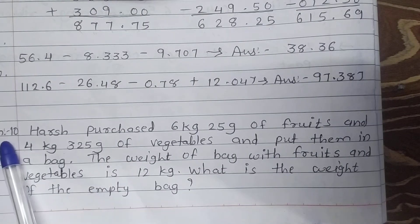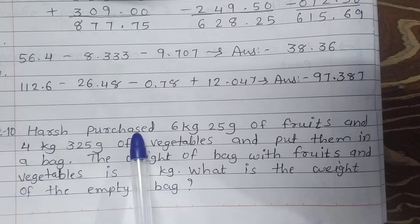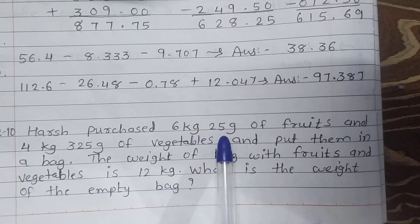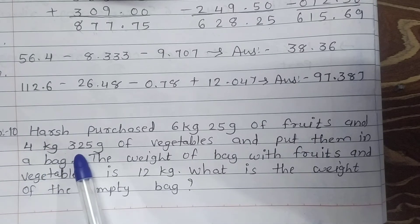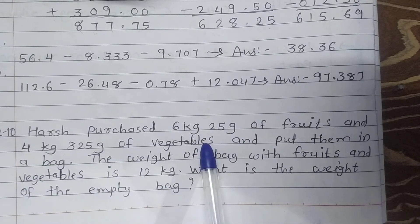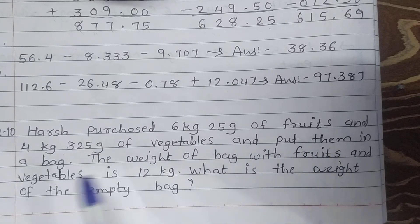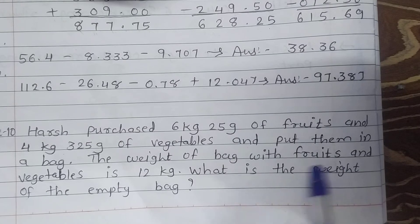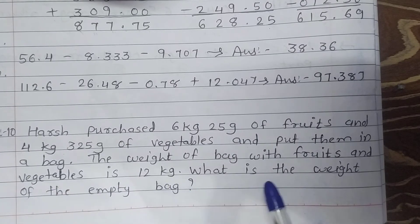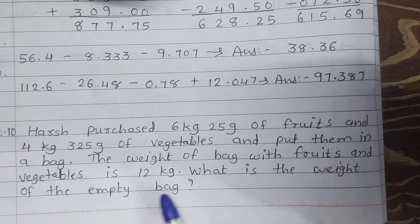Next, question 10: Harsh purchased 6 kg and 25 gram of fruits and 4 kg and 325 gram of vegetables and put them in a bag. The weight of bag with fruits and vegetables is 12 kg. What is the weight of the empty bag?